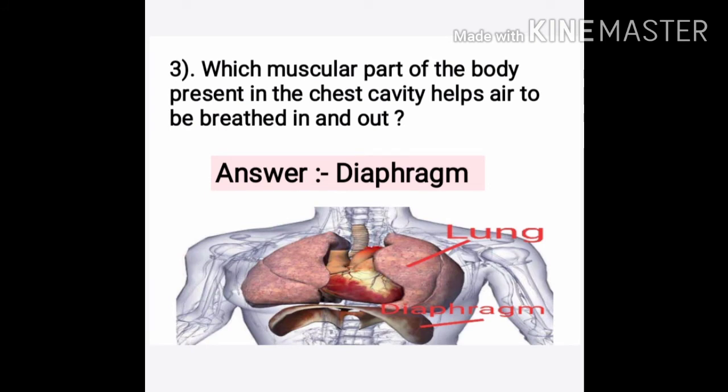Question three: Which muscular part of the body present in the chest cavity helps air to be breathed in and breathed out? The answer is the diaphragm. This is the muscular part — the muscular sheet on which your lungs rest.